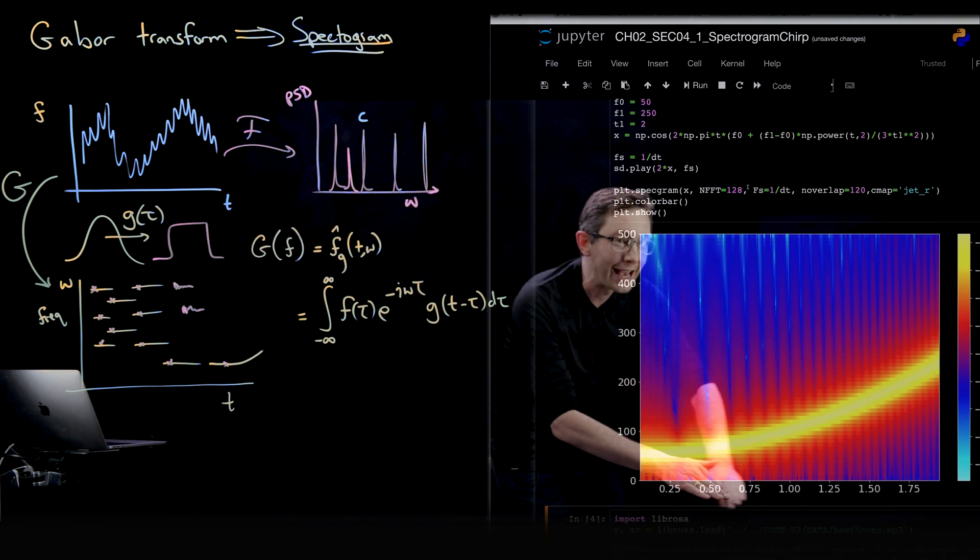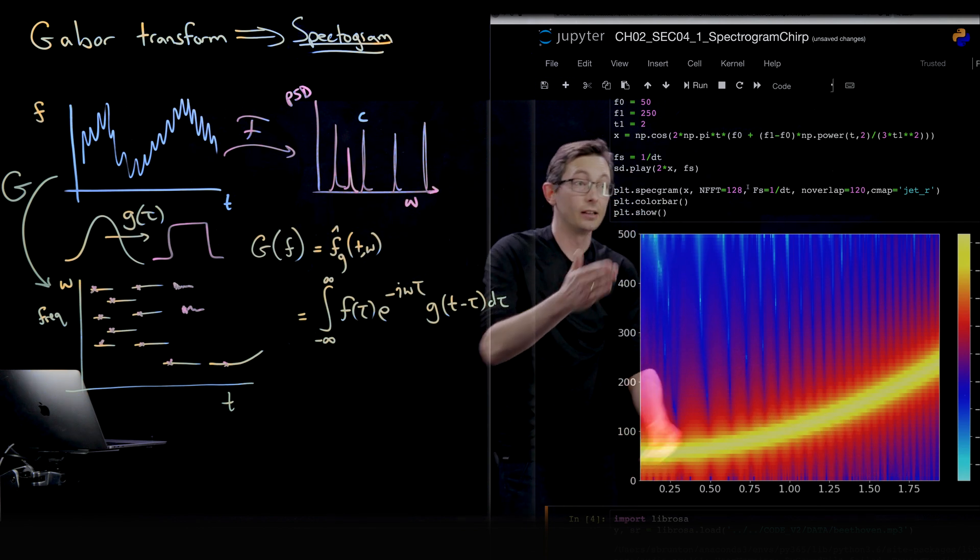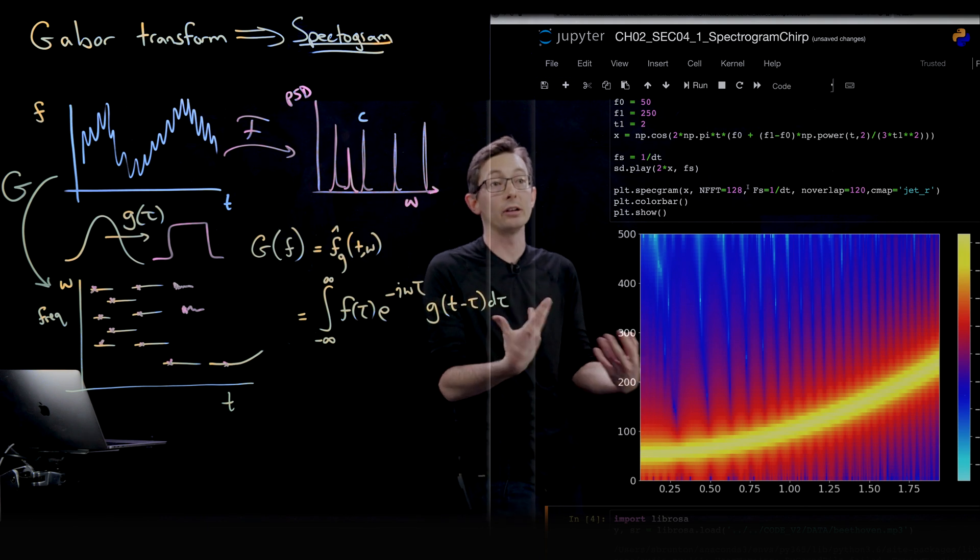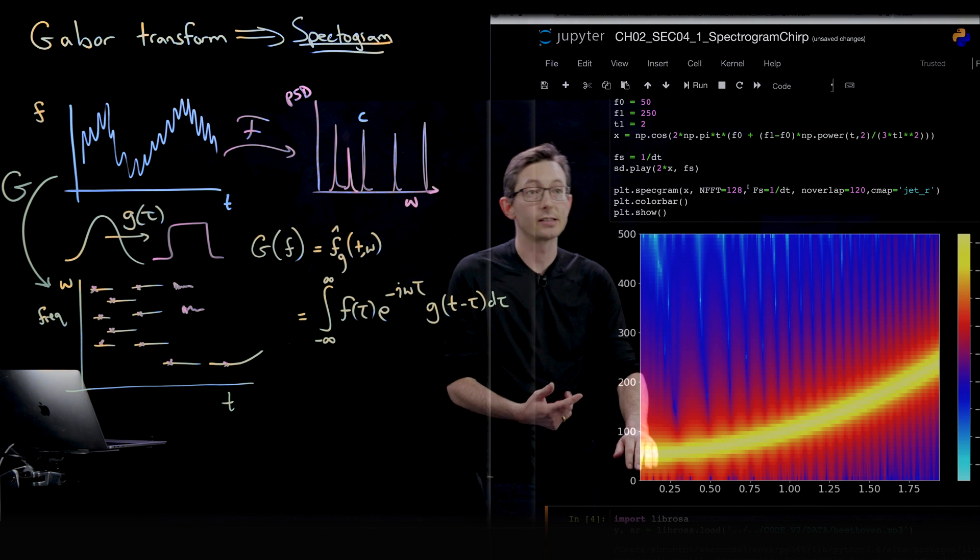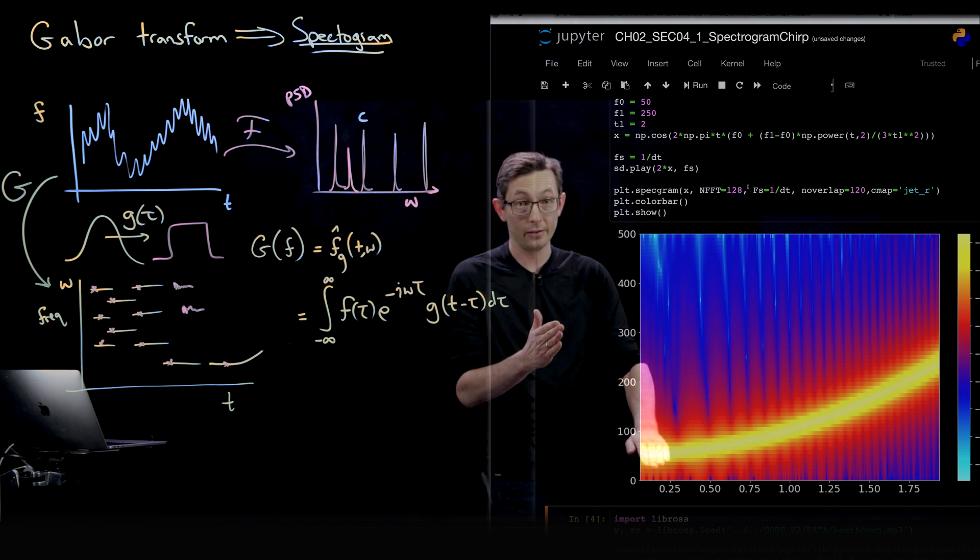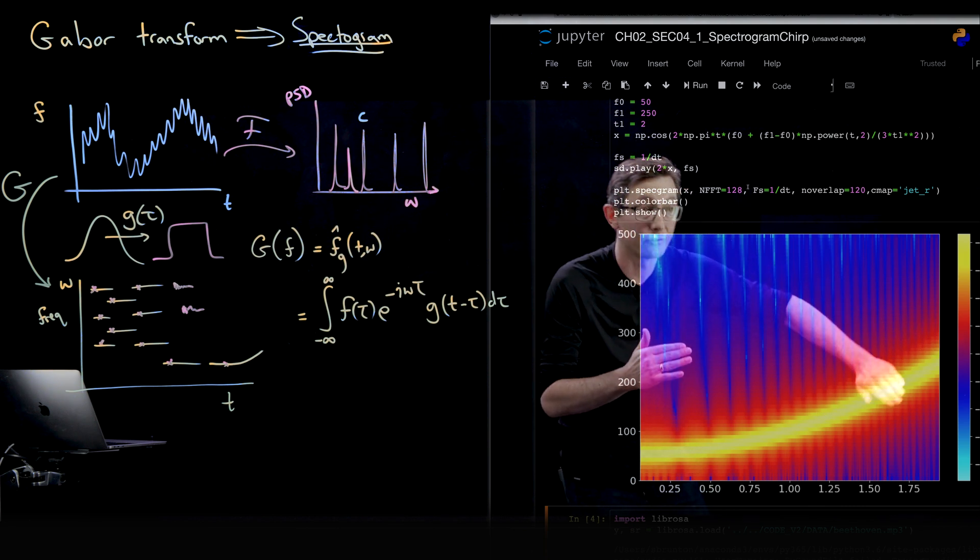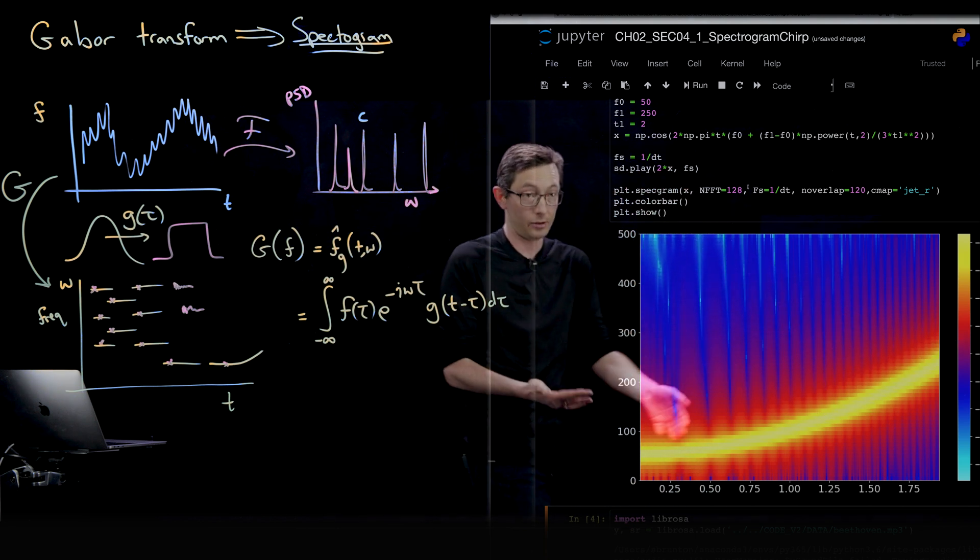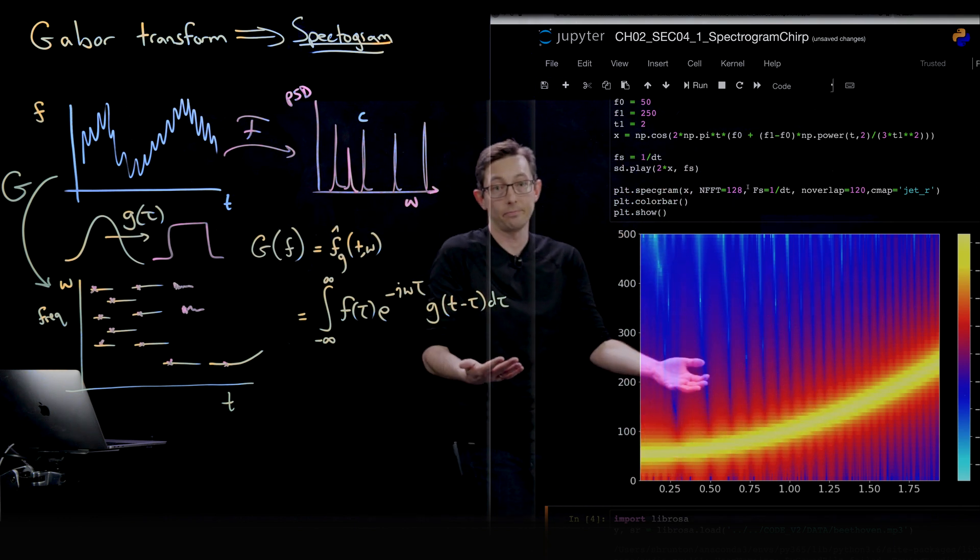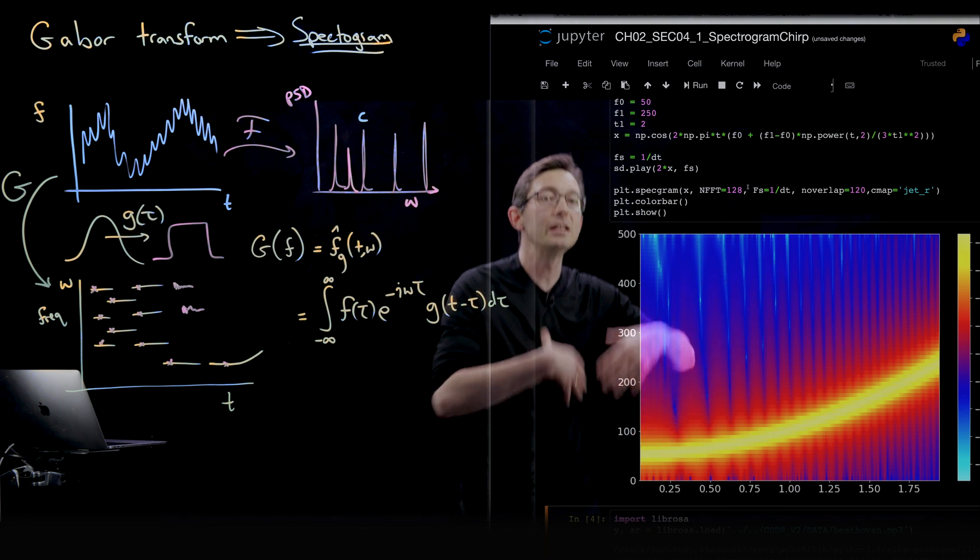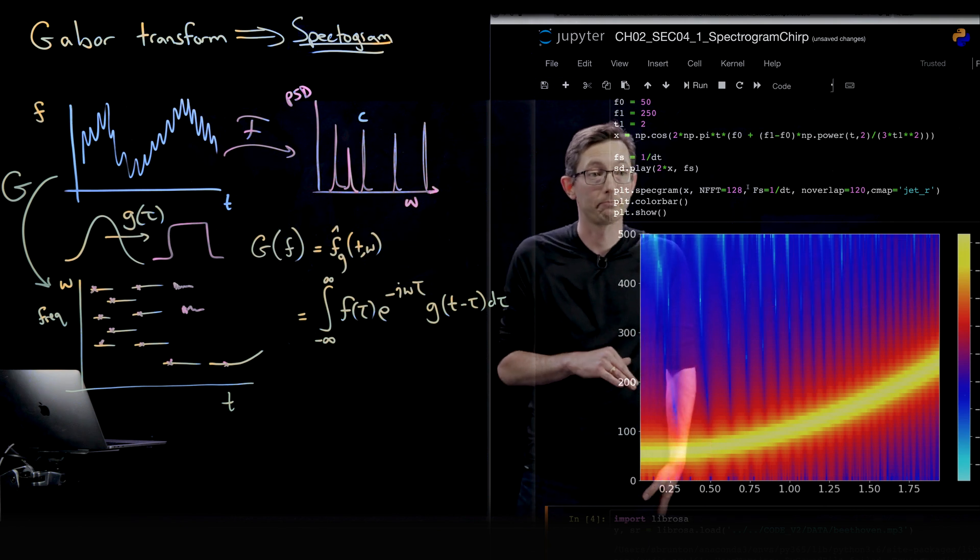And you can see here, so the x-axis is time, the y-axis is the frequency, and the intensity tells you how much power is in each of those frequencies. So here you have at 50 Hertz at time zero, there's a lot of power in 50 Hertz. And as time evolves, the power shifts up to higher and higher frequencies up to 250 Hertz. So it goes from low frequency to high frequency. And so this is a nice way of visualizing that audio signal as it evolves in time.